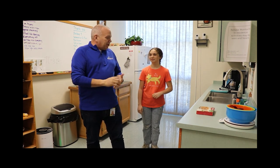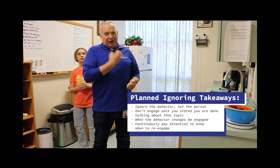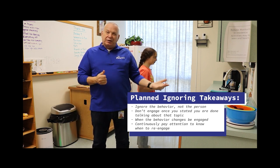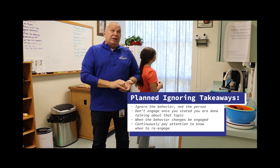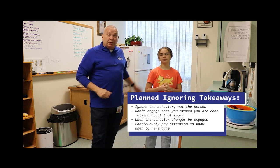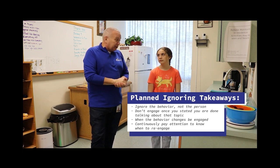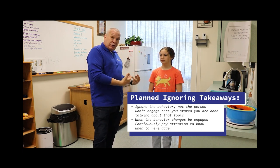For the demonstration of that, the key is that once I've said I'm done talking about something, I really have to bite my tongue and be done talking about it until a new subject comes up. With planned ignoring, the key is not to ignore the person, but to ignore the behavior we talked about — in this case, it was talking about the dog.